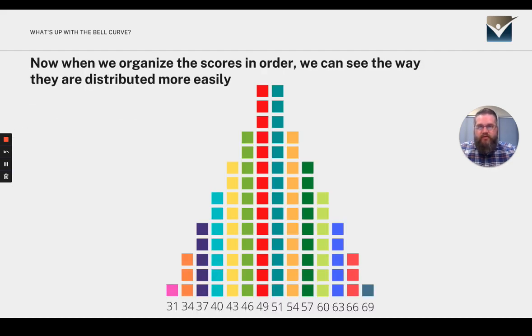And then when we organize the scores in order, we can see the way that they're distributed a little bit more easily. We have a range here that goes all the way from 31 to 69, and we can see all those scores in between and how they compare to each other.